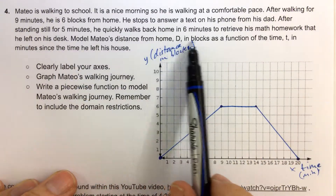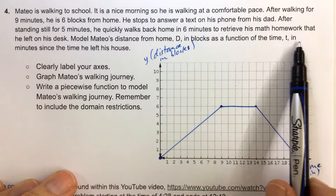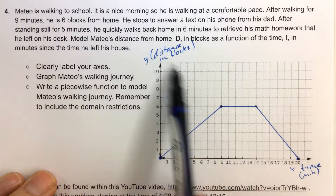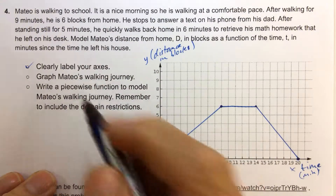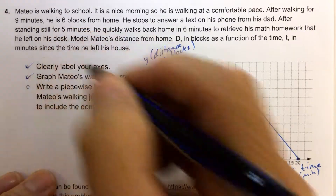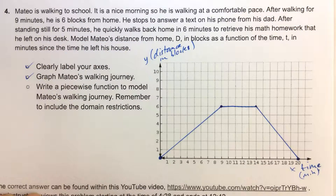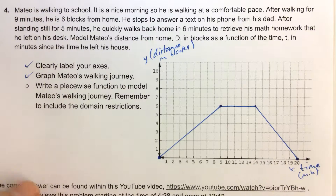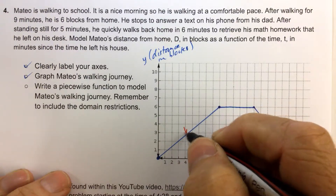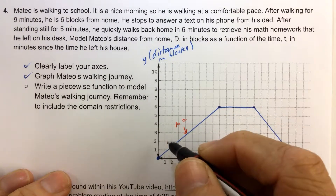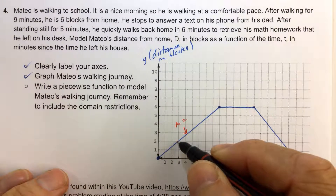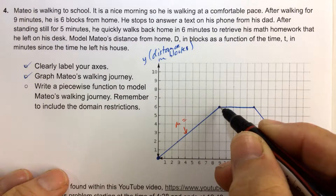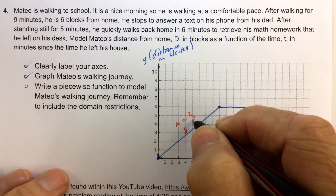Model Mateo's distance from home in blocks as a function of time — we already did that. Clearly label your axes — done. Graph Mateo's walking journey — done. Now write a piecewise function, so we need to find the slopes. The slope for the first piece is up two and over three, giving us two-thirds.